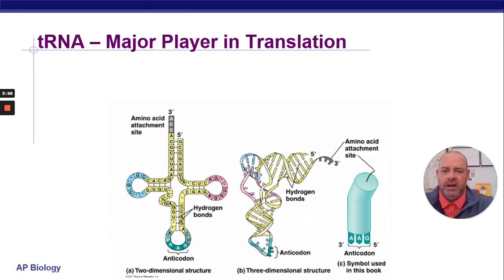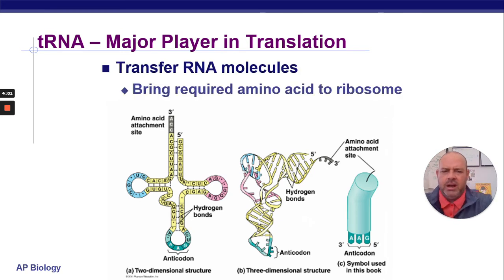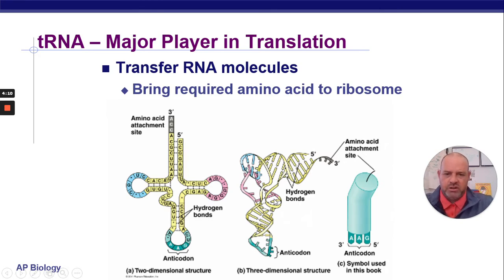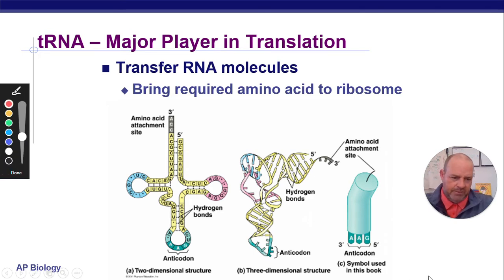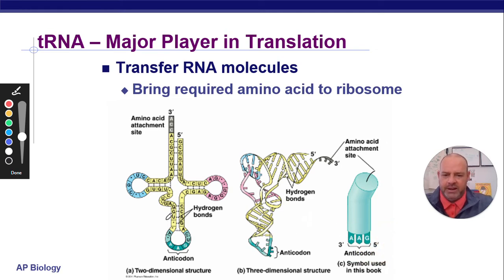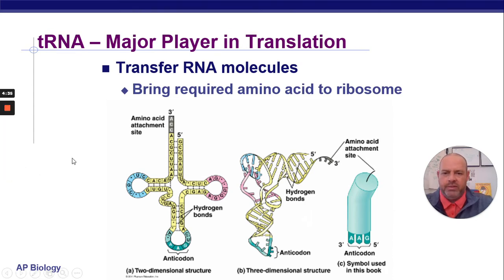tRNA is a major player. It gets drawn in different ways — there's the 2D structure that looks like a T, the 3D folded structure, and the cartoon version on the right. The cartoon really shows the anticodon easily — those three letters on the bottom that are going to match up with the codon. The anticodon on the tRNA will match up with the codon on the mRNA.